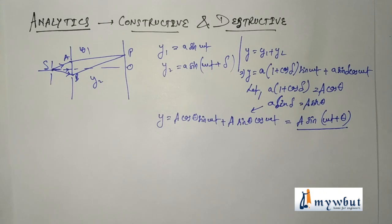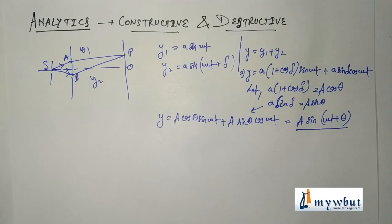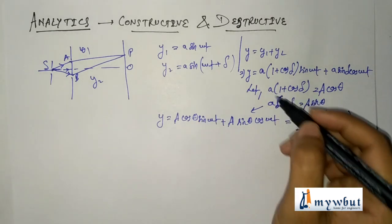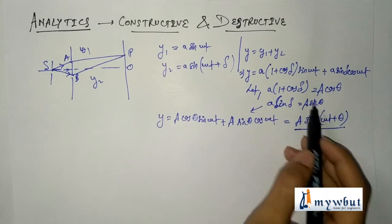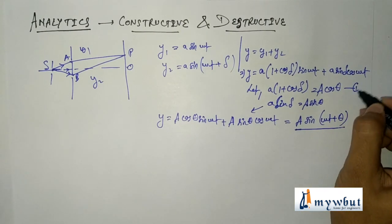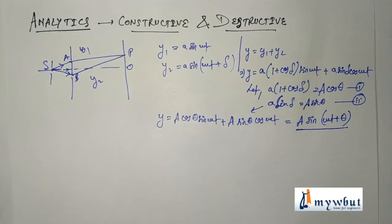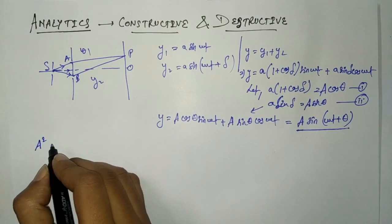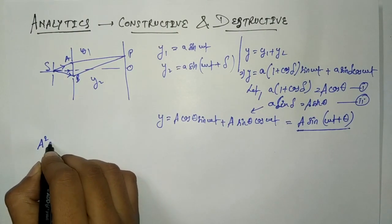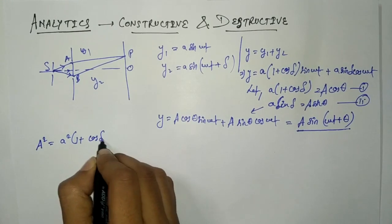Hence the resultant displacement at point P is a simple harmonic wave of amplitude A. The amplitude A can be obtained by squaring and adding the two substitution equations. Squaring and adding equations 1 and 2, we get A² = a²(1 + cos δ)².